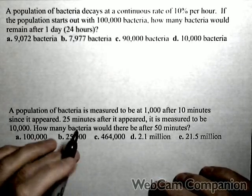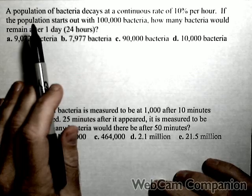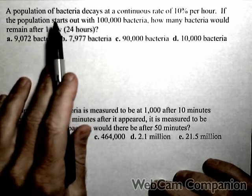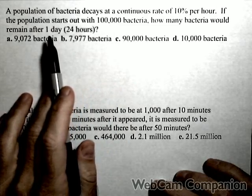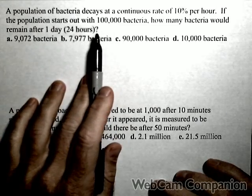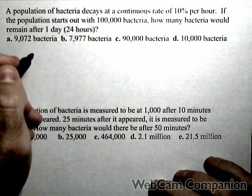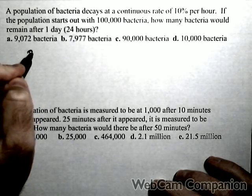In this video we've got a couple problems dealing with exponential decay. In the first one, a population decays at a continuous rate of 10% per hour. Now we need to pay attention to that, and it starts out with 100,000 bacteria. So that's enough information for us to build our model.